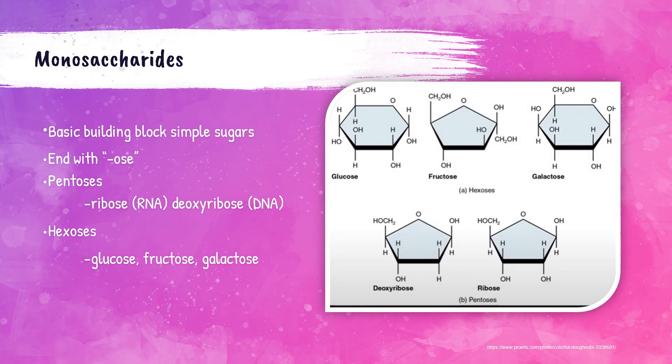The first classification are the monosaccharides, which are the building block simple sugars, classified based on the number of carbons in their chains. Trioses have three carbon atoms, tetroses four, pentoses five, and hexoses six. From a clinical laboratory perspective, the most significant are the pentoses and hexoses. Significant pentoses include ribose and deoxyribose, which are components of RNA and DNA respectively.